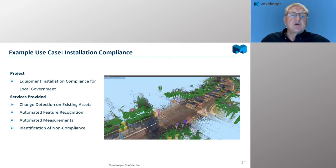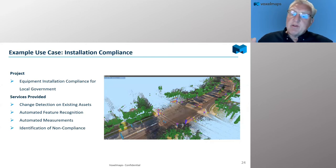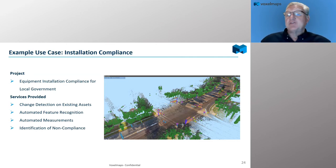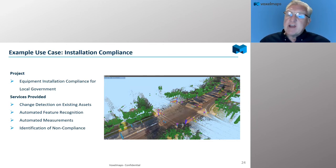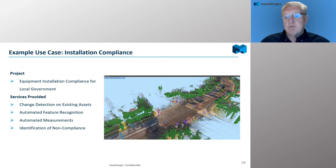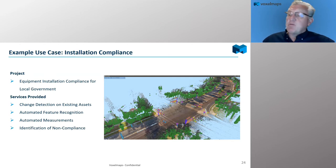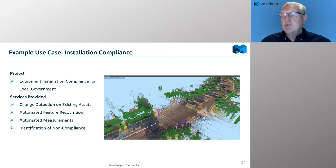Another use case is installation compliance. A local government wanted change detection on existing assets. We had an existing data set the customer had collected, put that into the voxel structure, drove the area, brought that new data into the voxel structure, and did a simple change detection — identifying places where new signage appeared, changes at intersections like new ADA-compliant curbs, and automated measurements. You can know if a sign within the right-of-way is too large for zoning restrictions — supporting identification of non-compliance across state-level government organizations.